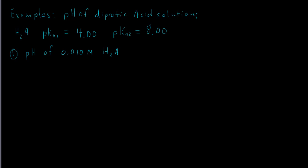Let's start with the pH of a 0.01 molar H2A solution. This is a weak diprotic acid, but we treat it as though it were a weak monoprotic acid. We imagine that mostly just the first proton comes off: H2A is in equilibrium with H+ plus HA- as the conjugate base, governed by Ka1.